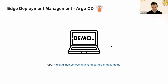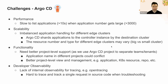This concludes our demo. Now let's talk about the challenges we've encountered using Argo CD. First is performance: because we have over 3,000 applications managed in the central Argo CD controller, we start to see the speed to list all those applications become slower, especially for developers who have permission to see all 3,000. Fortunately, most of our developers only have permission to see their own applications — usually around 200 to 300 — but we do see performance degradation as we add more applications.